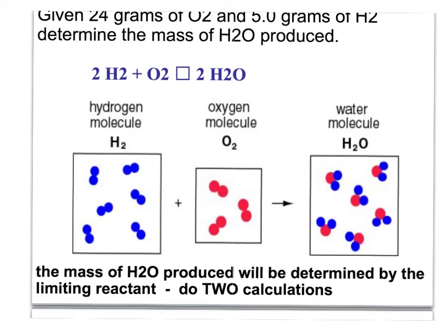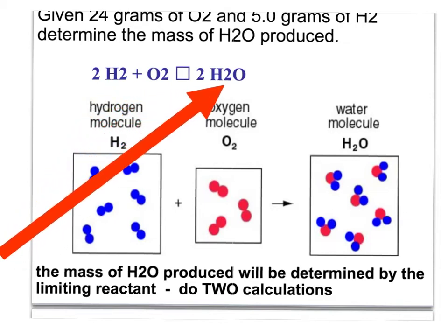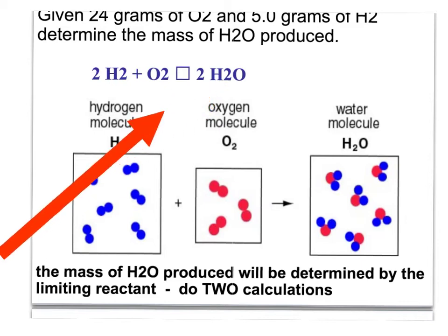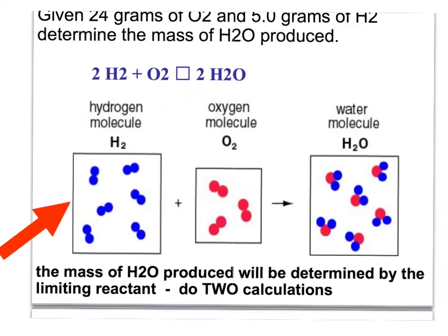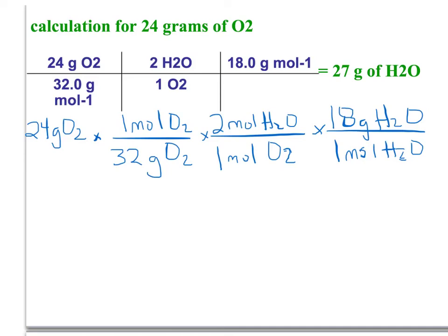As we go through this, we're starting with hydrogen and oxygen and then producing water. We're going to change hydrogen to water, oxygen to water, and then compare both of those results to see which reactant is limiting. First, let's look at the calculation of changing grams of oxygen to grams of water, starting with the grams of oxygen.